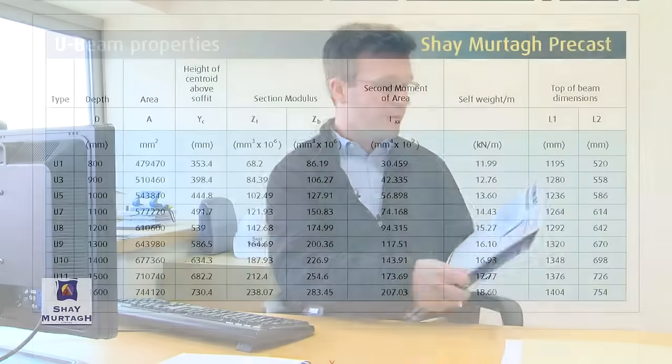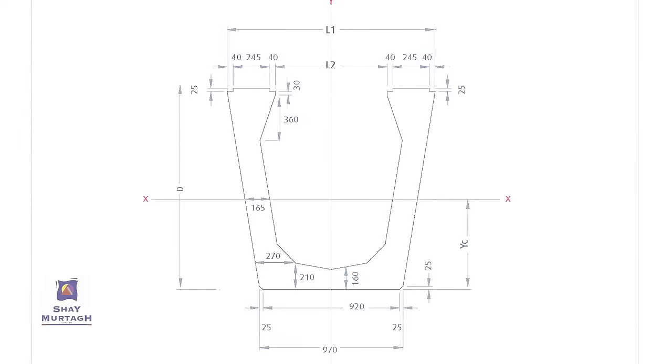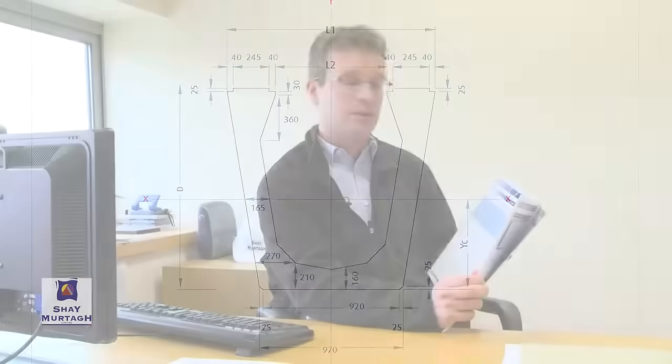For the detailed design of any of these beams, knowledge of the section properties of the relevant beams is essential, so all relevant section properties are clearly contained for all of the different beam types in the manual. We've also got the typical dimensions corresponding to the section properties, as well as typical details — both in-situ details and the standard shear link arrangement — and also the available pre-stressing strand layout with all available strand locations given.